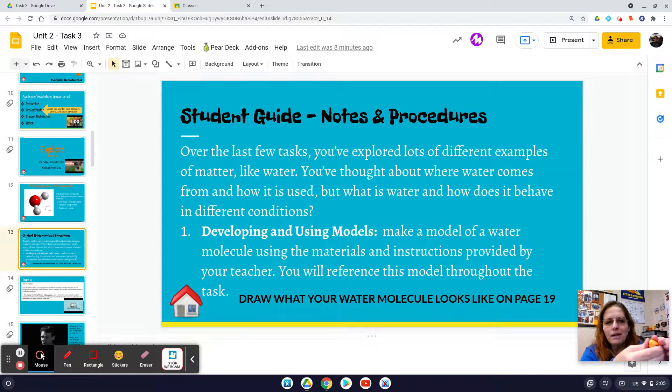A model would be an example of anything that's in your head and you need to get it out to explain it to someone else. If I need to explain to you how to get somewhere, I might draw a map - that's a model. It's not actually the size of the streets or the area you're going to, it's a model of that. So draw what your water molecule looks like on page 19. That's all there is to it. That's it for this part.